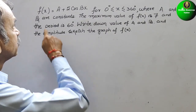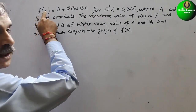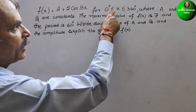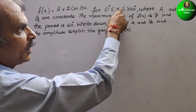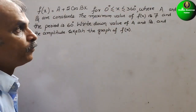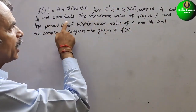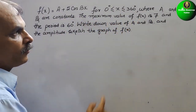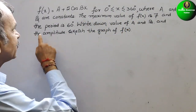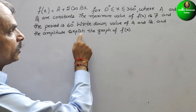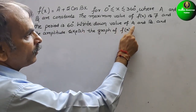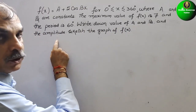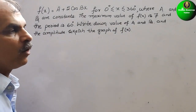The question is: f(x) = a + 5cos(bx) for 0° ≤ x ≤ 360°, where a and b are constants. The maximum value of f(x) is 7 and the period is 60°. Write down the values of a and b and the amplitude, then sketch the graph of f(x).